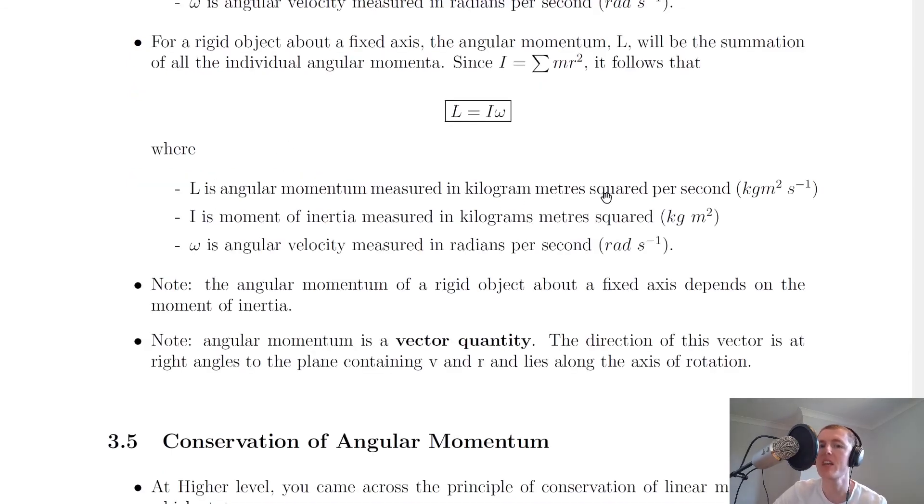So for a rigid object, we've got L is angular momentum measured in kilogram meters squared per second, I is moment of inertia measured in kilograms meters squared, and omega is angular velocity measured in radians per second.